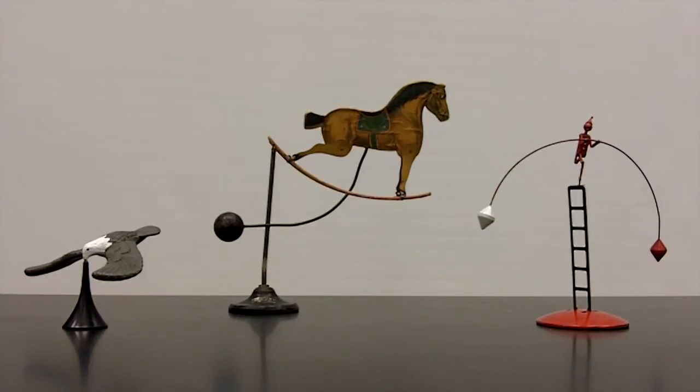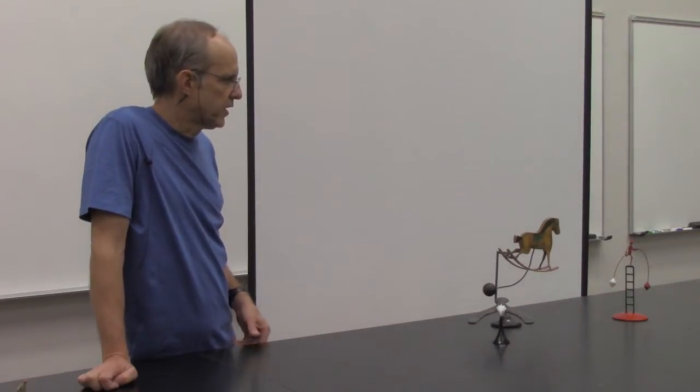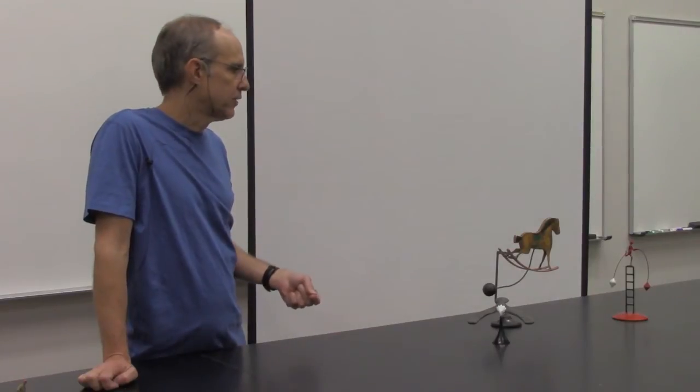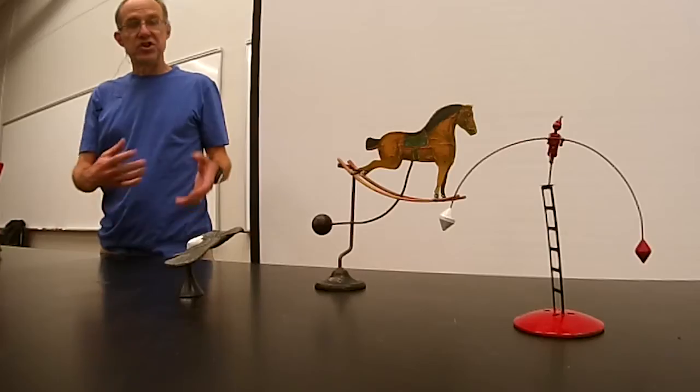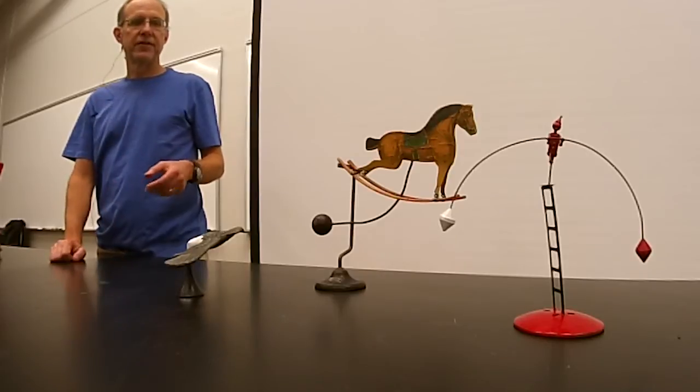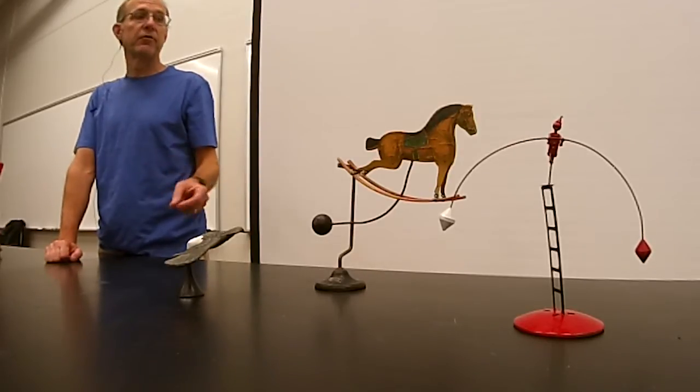All three of these balancing toys illustrate the same principle that an object will generally hang such that its center of mass is below the pivot point. And while the geometries are giving the illusion that these objects are not centered below the pivot point, in fact, they really are.